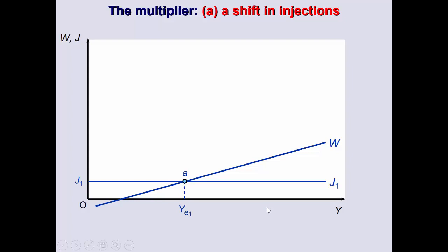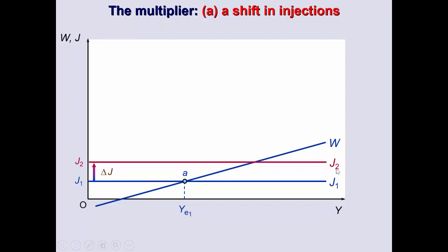Let's start with the case where we are in equilibrium point A, where withdrawals equal J. Remember, J is constant and doesn't depend on income levels, while withdrawals change as income changes. Now assume there is a change in J — injections are composed of investment by firms, government expenditure, and export expenditure. Any or all of these changing means shifting the J curve upward, giving us a new line J2 — it's constant so it's a horizontal line.